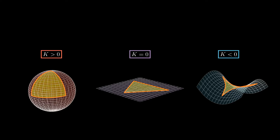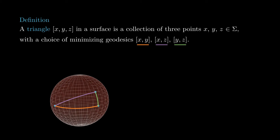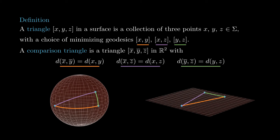To state it, we first need to define what is a comparison triangle. In a surface sigma, a triangle is a choice of three points x, y, z together with minimizing geodesics xy, xz, and yz. A comparison triangle of x, y, z is a triangle x-bar, y-bar, z-bar in the Euclidean plane R² whose sides have the same length as the ones of the original triangle.